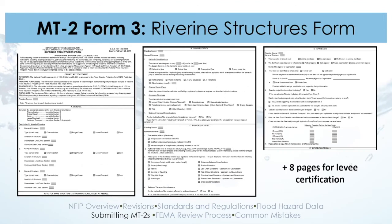MT2 Form 3 is the river and structures form, where you outline what has been changed — what new structures are included, whether it was a physical change, channelization, bridge, culvert, levee, or dam. There are an additional eight pages for levee certification, and if submitting a levee for review, there is a certification on one of those final pages that must be certified by a professional engineer.